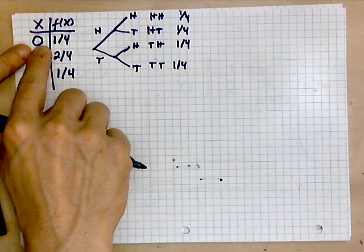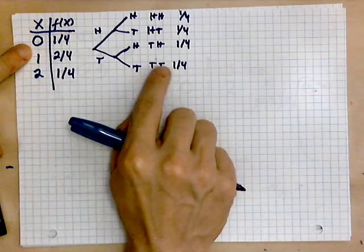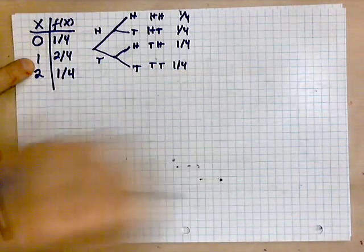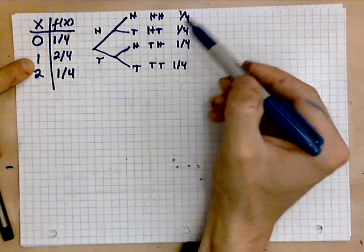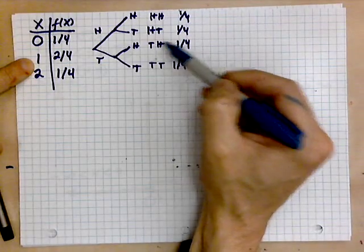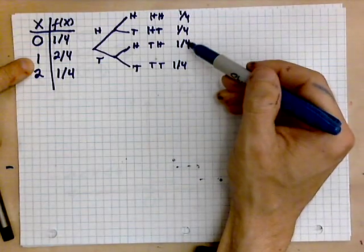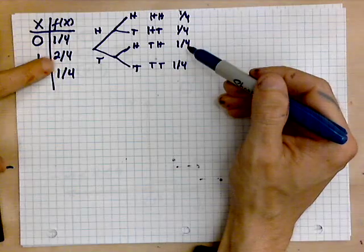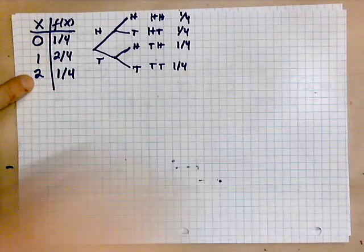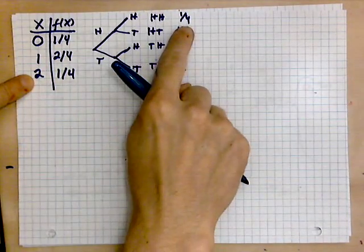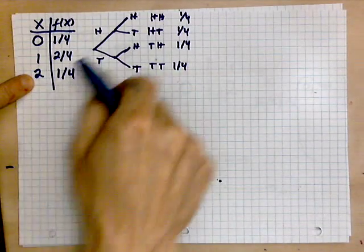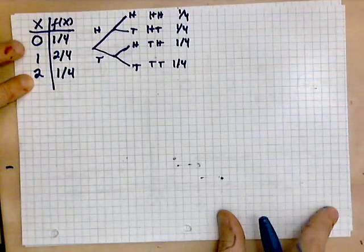So x is the number of heads within two tosses. If it's zero, the only way that can happen is if you get a tail and a tail, that's one out of four. If you get one head, that can happen either when you get head-tail or tail-head, that's a quarter and a quarter, which is two quarters. Two heads can happen once again, head followed by a head, which is only one out of four.